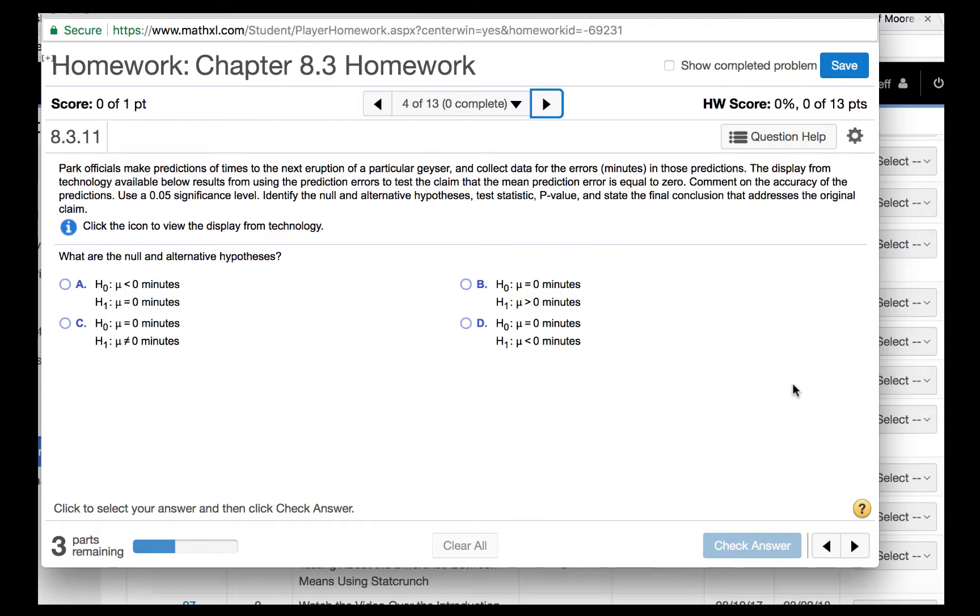Park officials make predictions of times to the next eruption of a particular geyser and collect data for the errors in minutes in those predictions. The display from technology available below results from using the prediction errors to test the claim that the mean prediction error is equal to zero. Comment on the accuracy of the predictions. Use a 0.05 significance level, identify the null and alternative hypotheses, test statistic, p-value, and state the final conclusion that addresses the original claim.